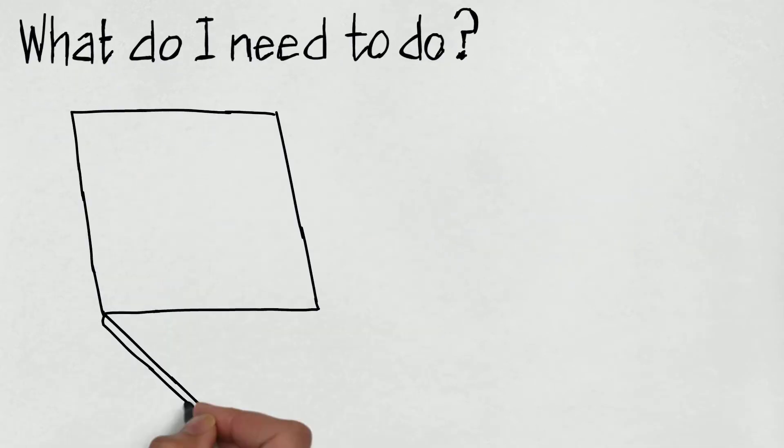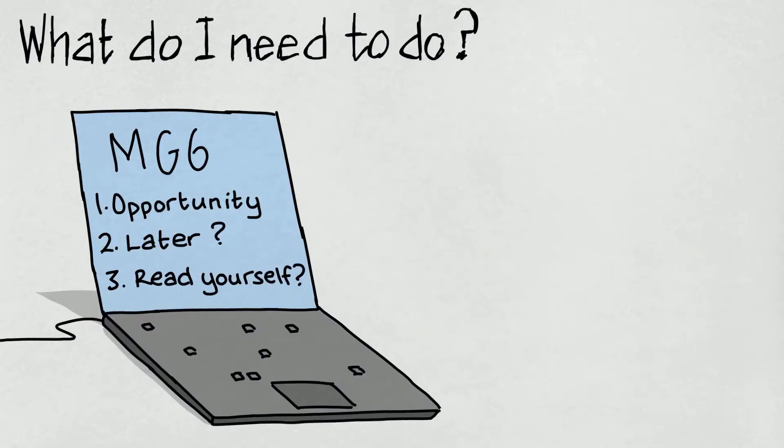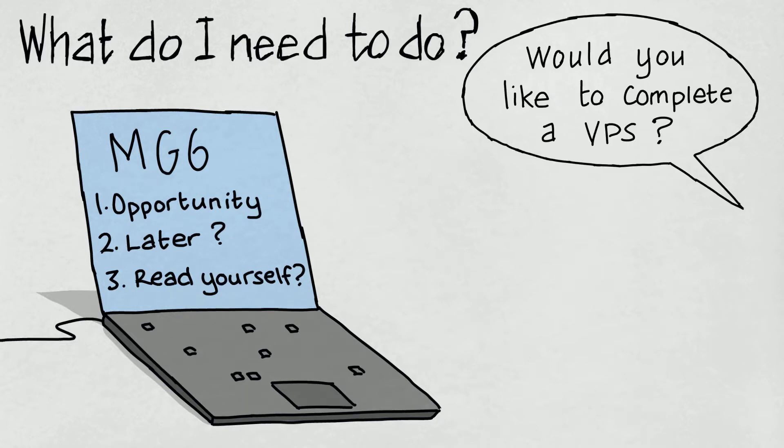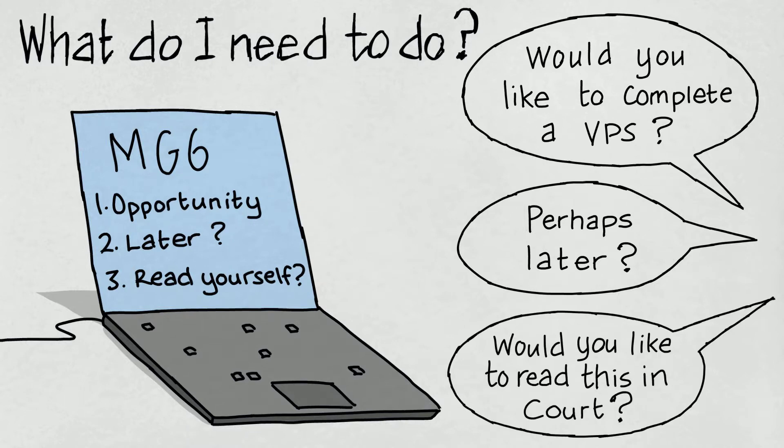What do I need to do? Ensure the following details are recorded on an MG6. Has the victim been given the opportunity to complete a VPS? If they declined, do they wish to make one at a later date? If they made one, do they wish to read it to the court themselves or have the CPS prosecutor do it on their behalf?